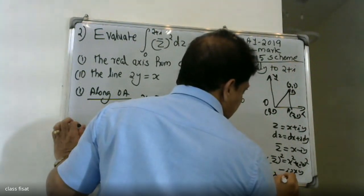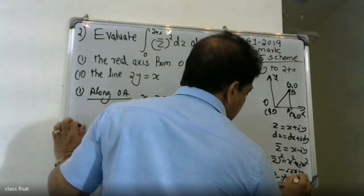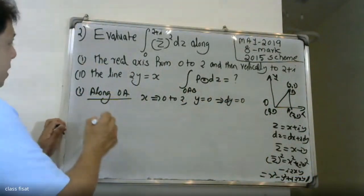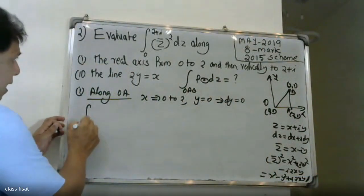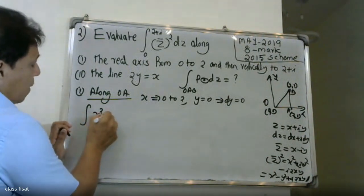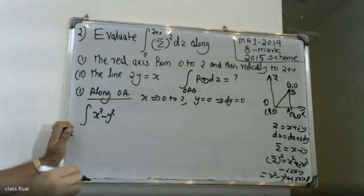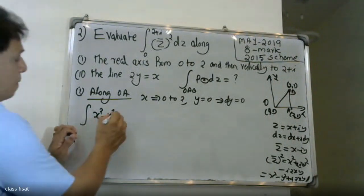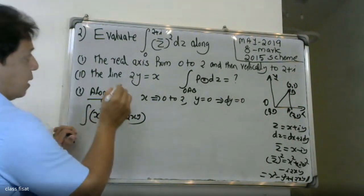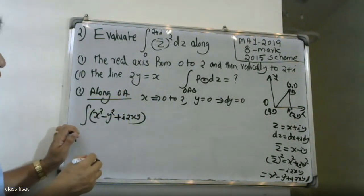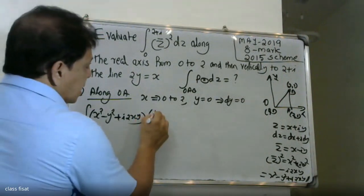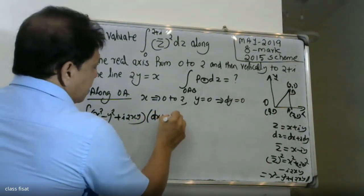Expanding: z² gives x² minus y² plus i times 2xy. So the integrand is x² minus y² plus i times 2xy. This is the z̄ expression we will integrate.